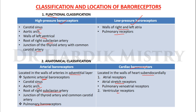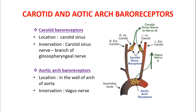Atrial receptors include atrial stretch receptors and pulmonary veno-atrial receptors. Carotid baroreceptors are located in the carotid sinus and are innervated by the carotid sinus nerve, which is a branch of the glossopharyngeal nerve — the ninth cranial nerve. Aortic arch baroreceptors are located in the walls of the arch of the aorta and are innervated by the vagus nerve, the tenth cranial nerve.